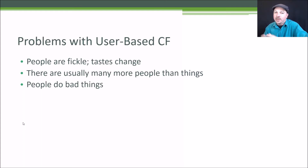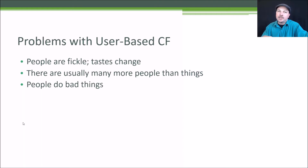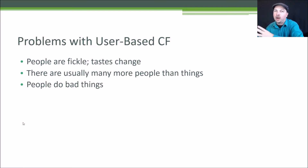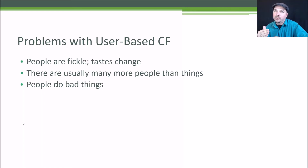Unfortunately, user-based collaborative filtering has some limitations. One problem is that people are fickle — their tastes are always changing. If the lady had a brief sci-fi action phase and later moved on to dramas or rom-coms, we might end up recommending romantic comedies to the Mohawk guy just based on their earlier similarity. People's tastes changing over time pollutes our data and makes comparing people to people not always straightforward.